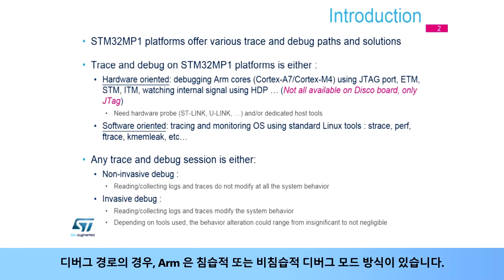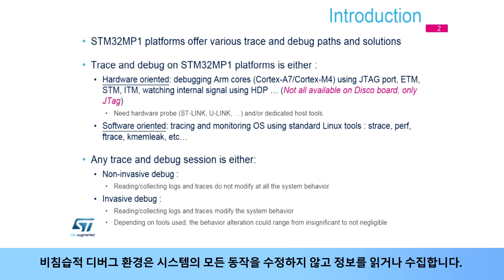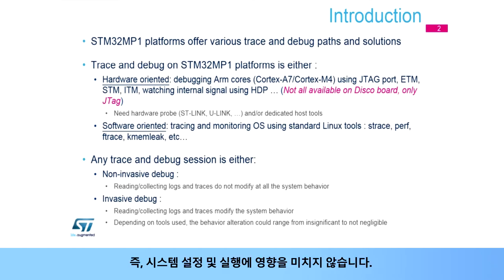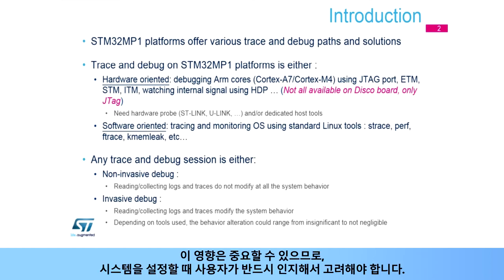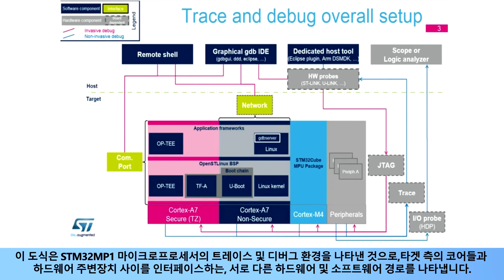For a debug path, ARM also introduces notions of invasive and non-invasive debug modes. Non-invasive debug environment reads or collects information without modifying the behavior of the system, meaning it does not impact the system setup and execution. On the contrary, in the invasive debug environment, the system behavior is impacted. This impact can be important and has to be known and taken into account by the user when setting up the system.